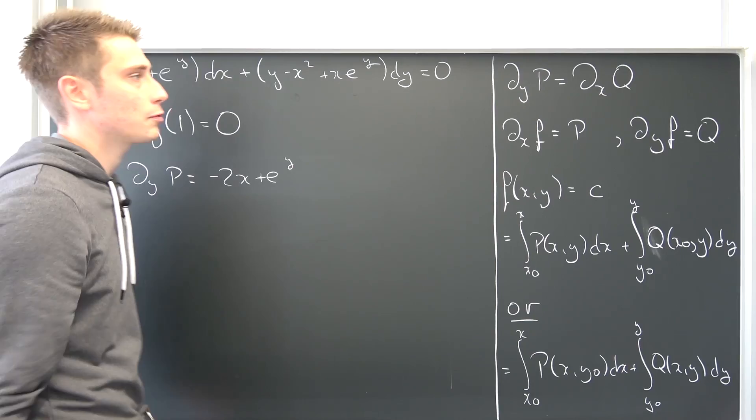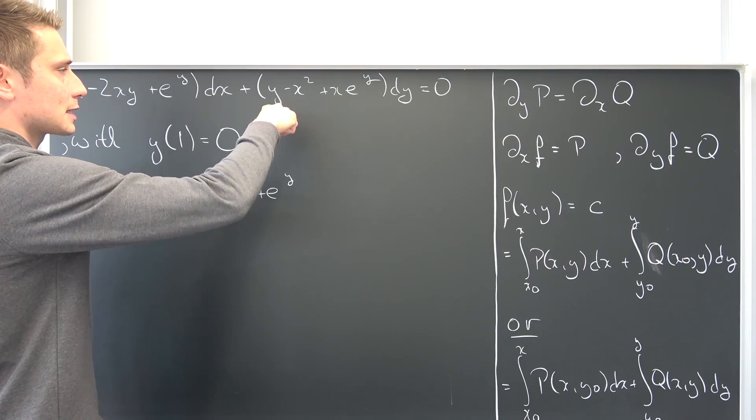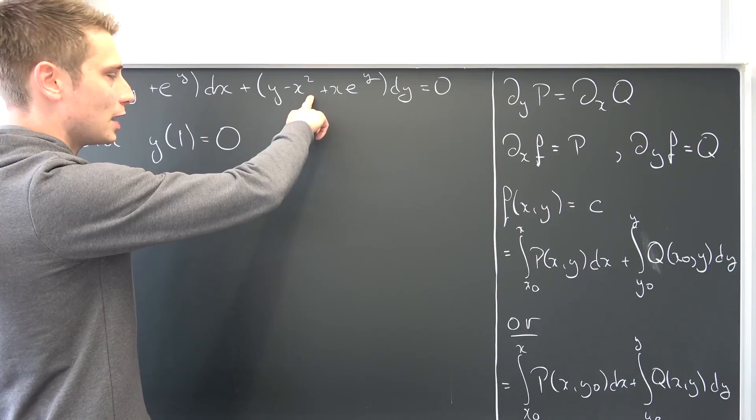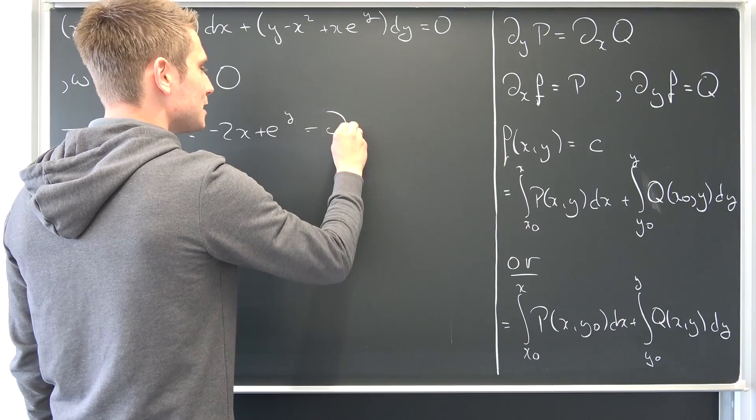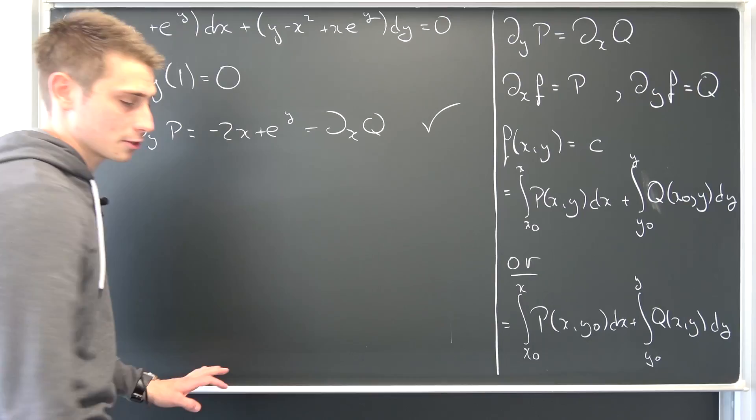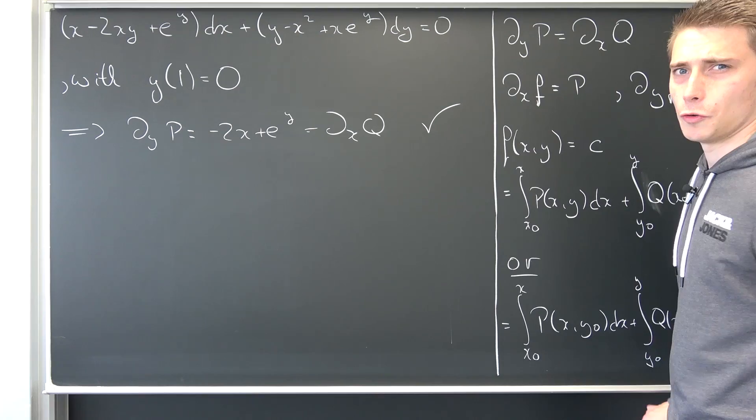But is this the same as Q differentiated with respect to x? We are going to see. If we differentiate this with respect to x, our y is going to vanish; we bring the 2 down and reduce the power by one, so negative 2x — that's the same as here. Also, differentiating e to the y with respect to x: e to the y is just a constant, so it's going to be e to the y. So del_x Q equals del_y P — this is indeed exact.